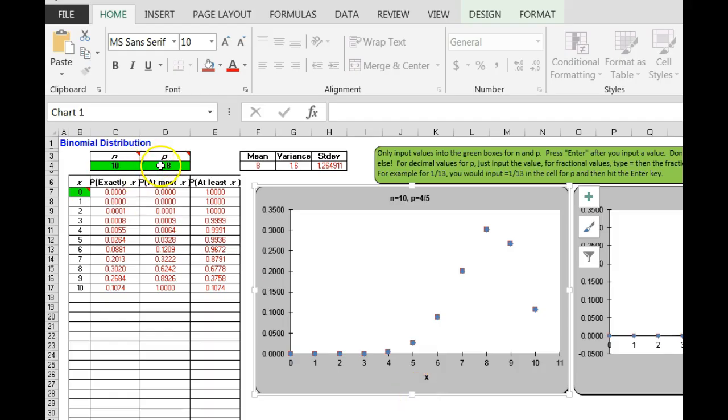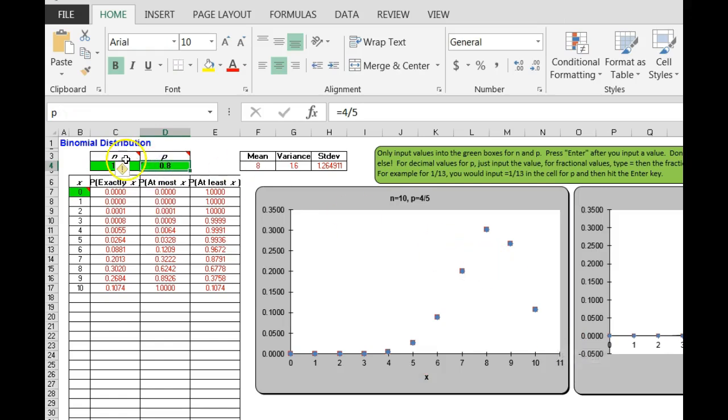So for two-fifths, I need to go back in and change my p-value. Remember, for two-fifths, under p I type equals two divided by five. Hit the enter button.